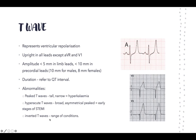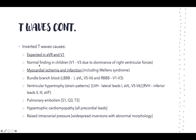T waves can also be inverted, associated with a range of conditions. Inverted T waves can be a normal finding in children due to dominant right ventricular forces. They're expected in AVR and V1. An important association is myocardial ischemia — Wellens syndrome refers to biphasic or inverted T waves in precordial leads indicating a left anterior descending infarction, which we'll cover in a dedicated session.